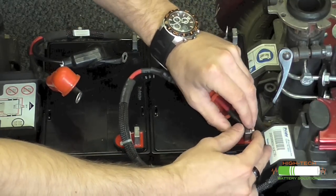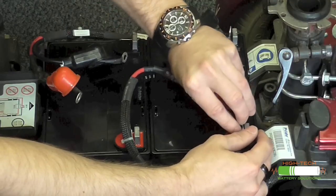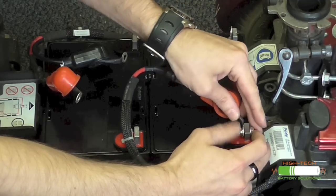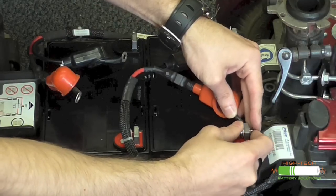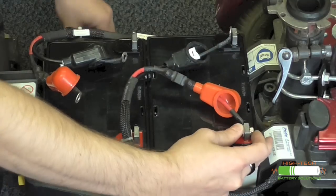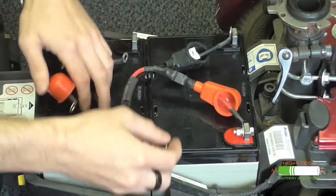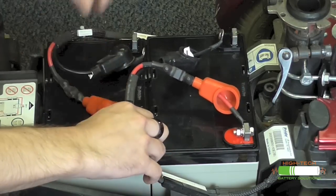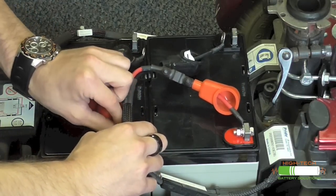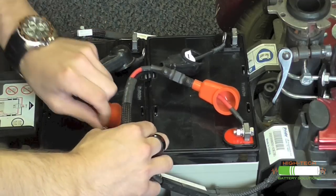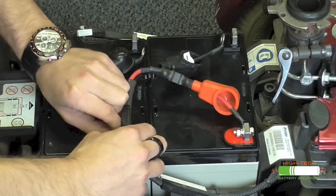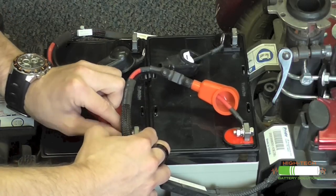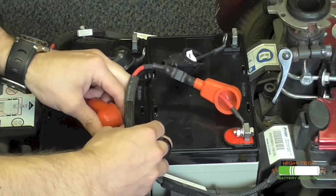We're just going to make them hand tight here. So positive there. And we're going to hook up the second positive here. I'd like to hook up the positives here first to eliminate any possibility of the shorting on the frame itself. I just think it's a good idea in general whenever you're dealing with more than one set of wires.